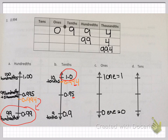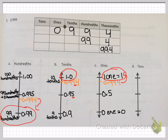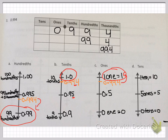Continuing on to rounding to the nearest one. We have zero ones at the bottom and one one, equal to one, at the top. In the middle there's five tenths — that's halfway between one and zero. Our number is rounding up to one. Now we're taking the same number and rounding to the nearest ten. We know it's going to be between zero and ten. Five ones is our midpoint, and there is our number, 0.994. You can see that it's closest to zero tens.